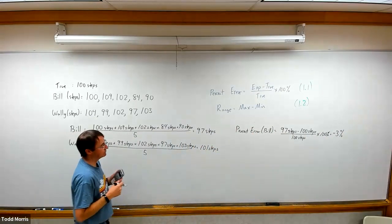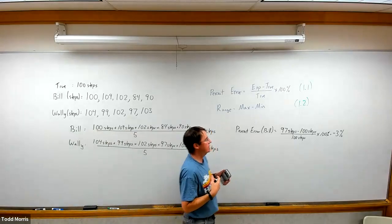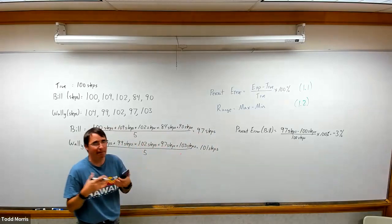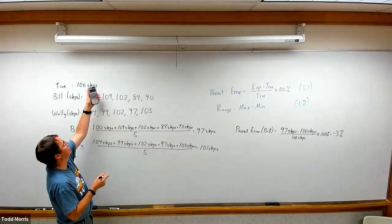For Bill the percent error was negative three percent, so on average this means that his fitness tracker was recording about three percent fewer steps than he actually was taking.